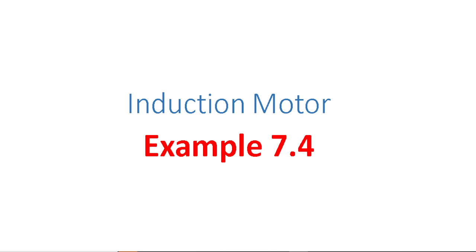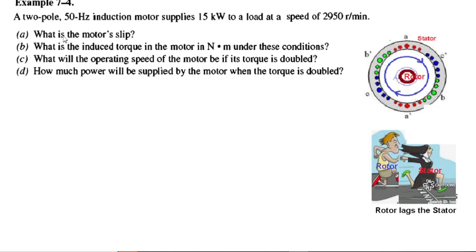Bismillahirrahmanirrahim. This video is another in the induction motor series and here we will be solving example 7.4. We go straight to the example: a two-pole, 50 hertz induction motor supplies 15 kilowatt to a load at a speed of 2950 revolutions per minute. We have to find four parameters and will deal with them one by one.